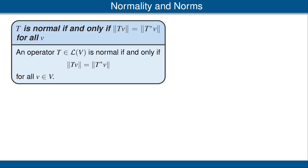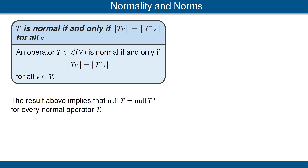Our next result states that an operator T is normal if and only if the norm of T(v) equals the norm of T*(v) for every vector v. Before we get to the proof, notice this implies that the null space of T equals the null space of T* when T is normal. The null space of T is the set of vectors v such that ‖T(v)‖ = 0, and by the equation in the result, this is the same condition as ‖T*(v)‖ = 0, so T and T* have the same null space.